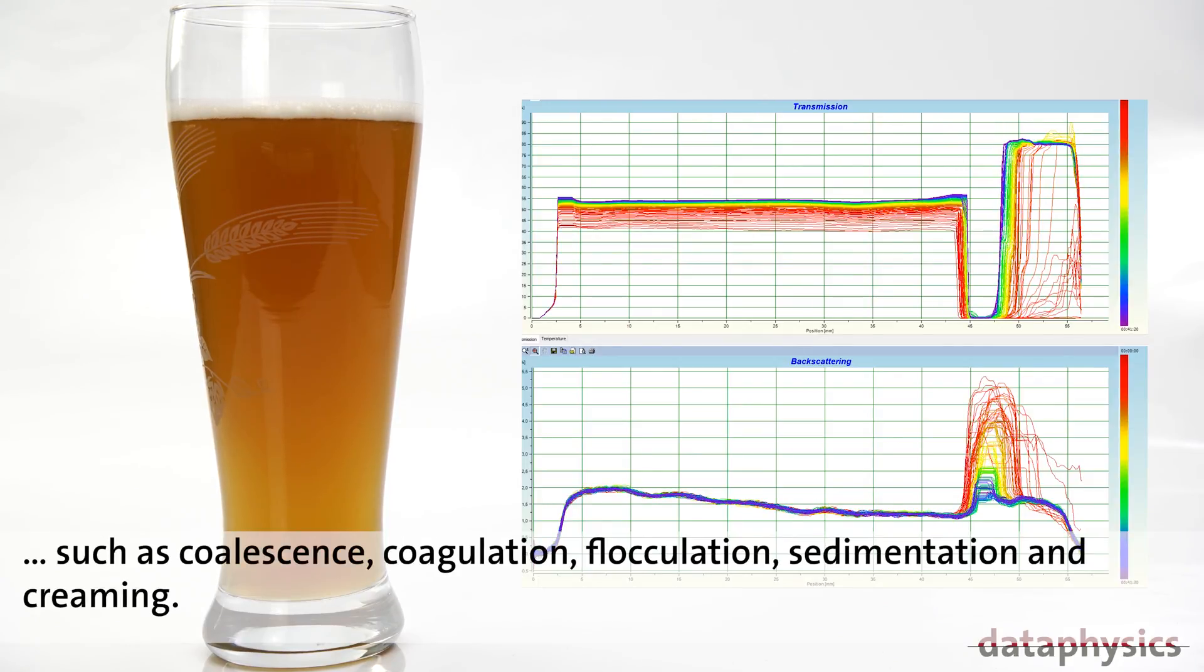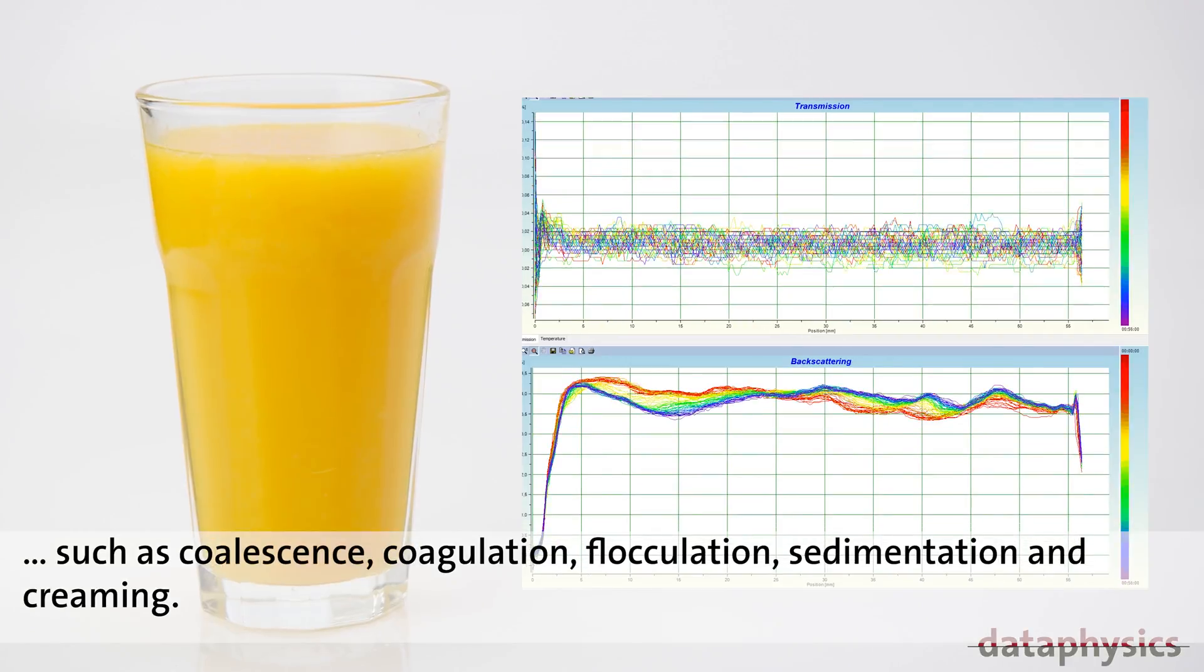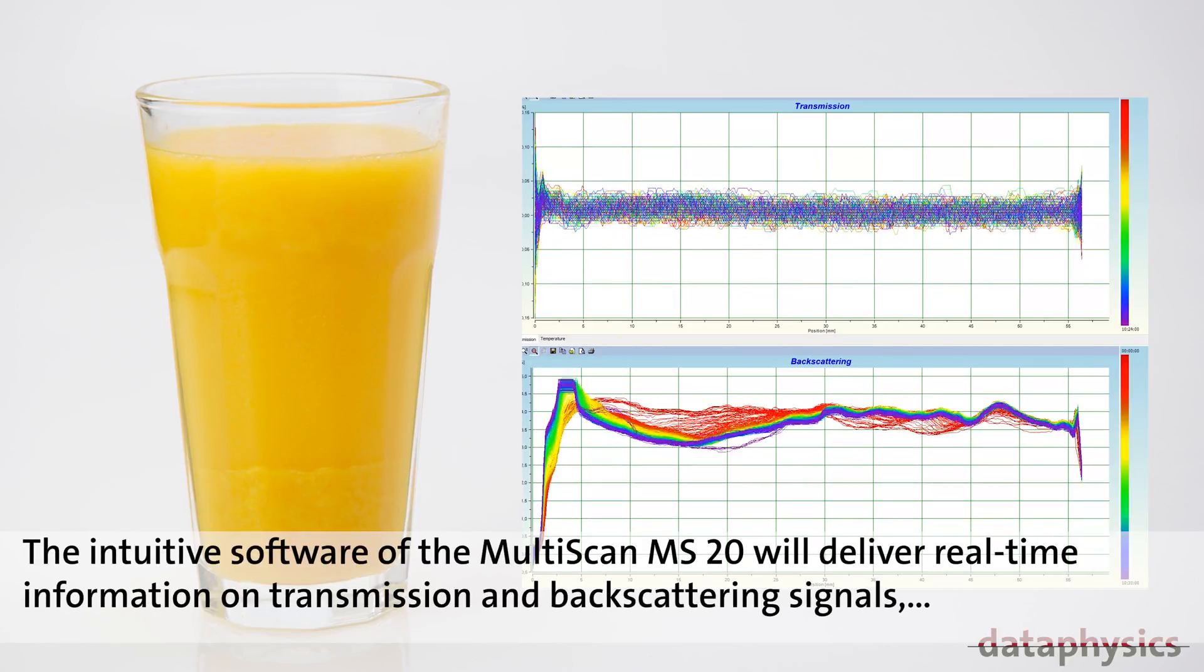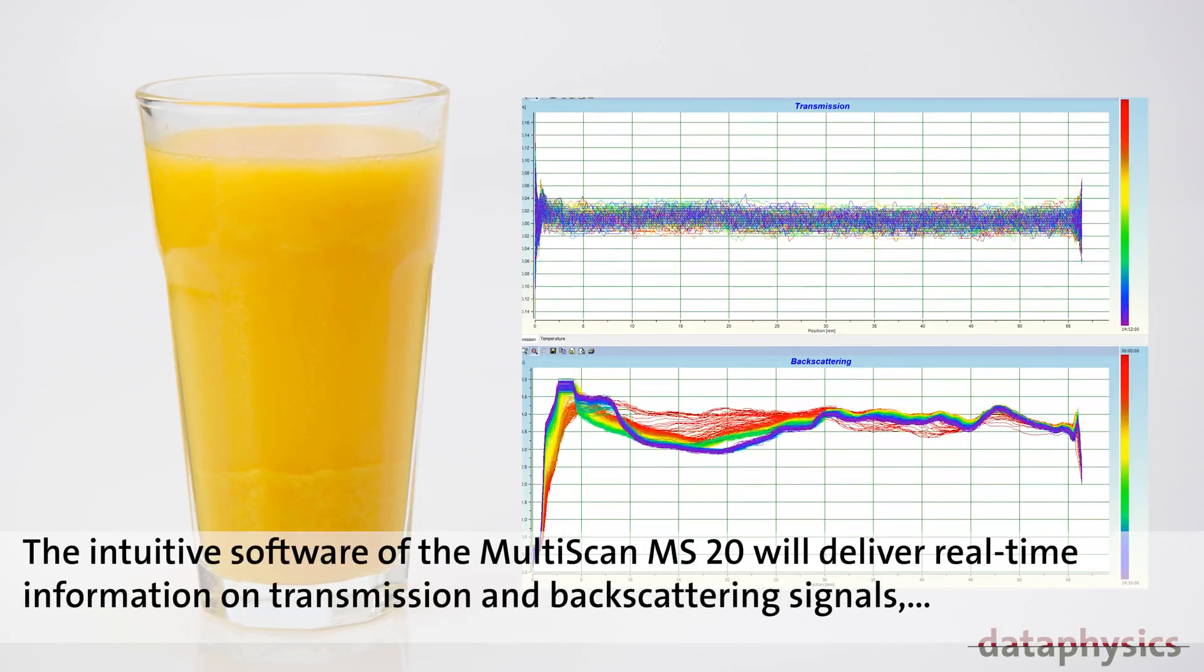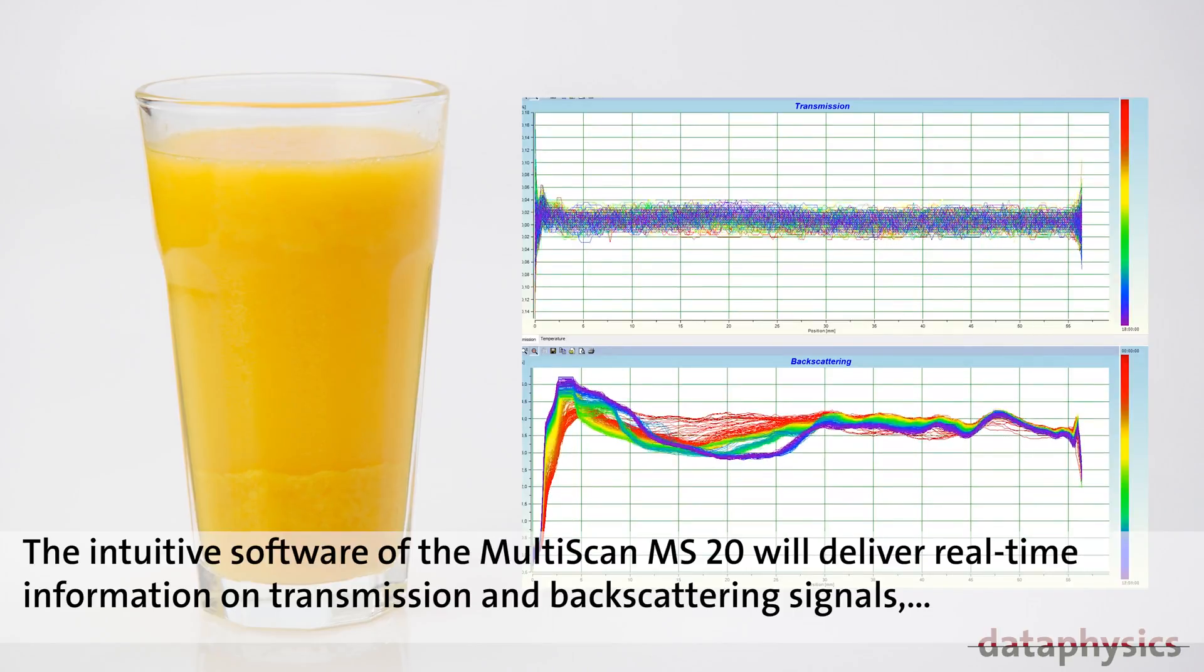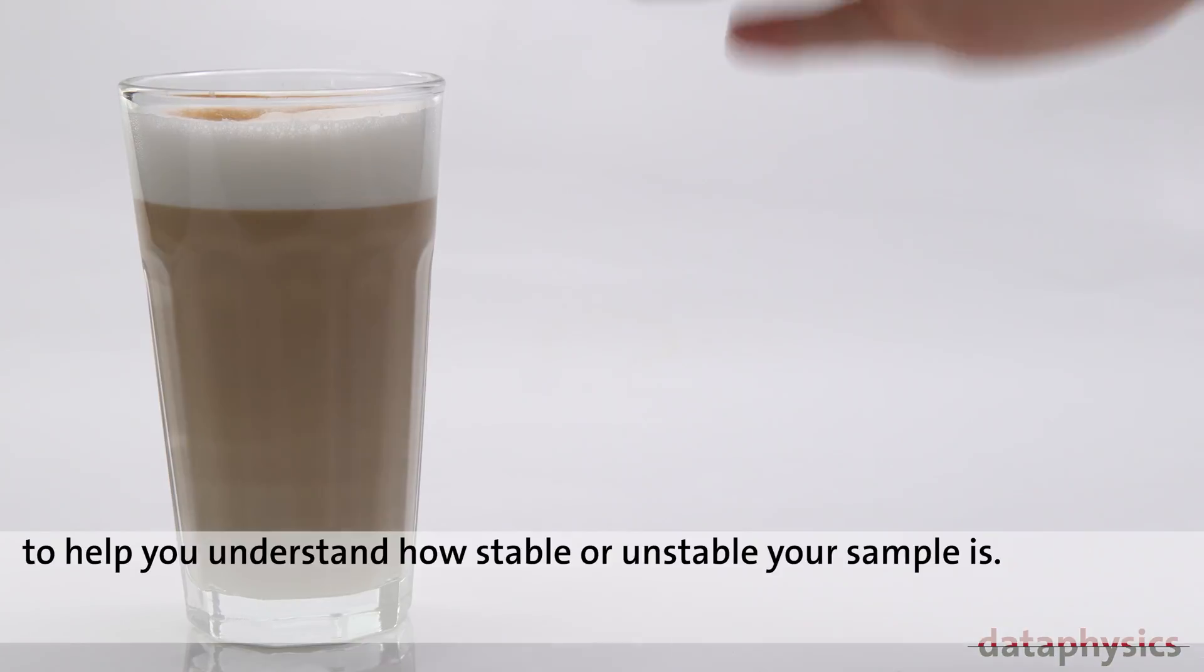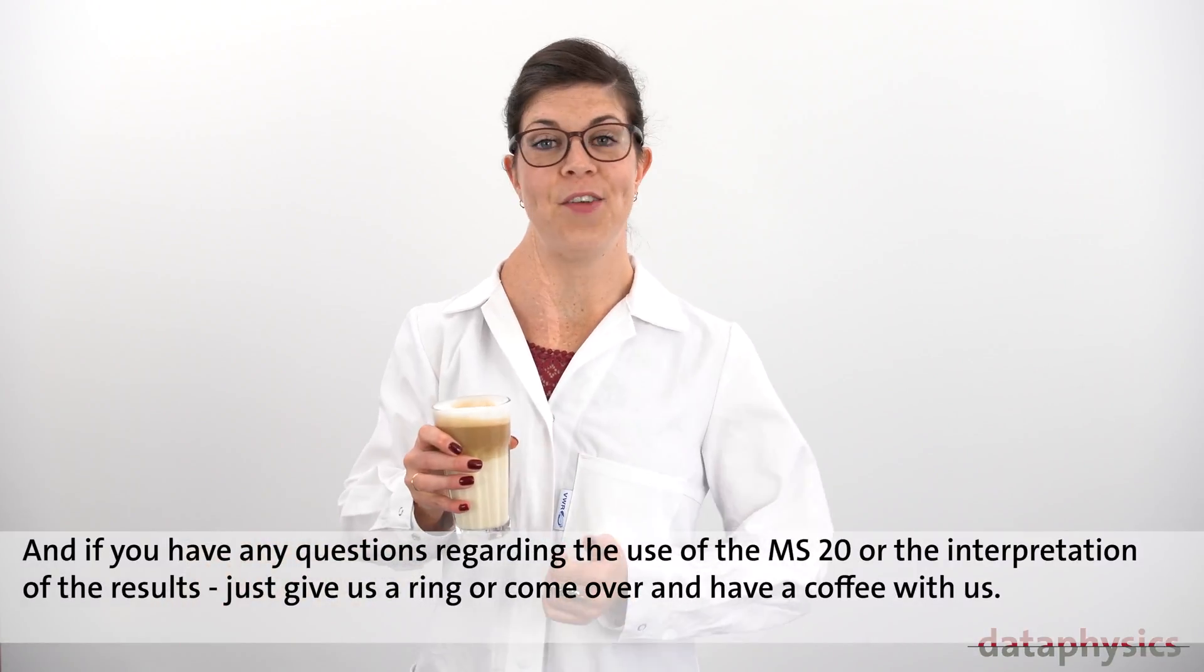The intuitive software of the MultiScan MS20 will deliver real-time information on transmission and backscattering signals to help you understand how stable or unstable your sample is.